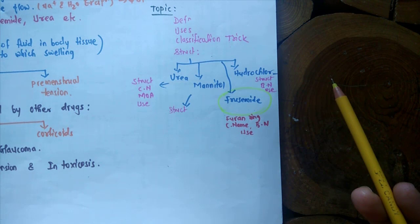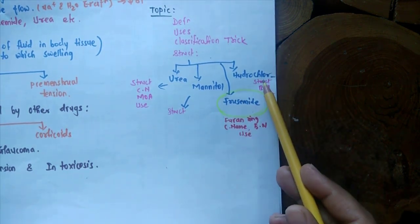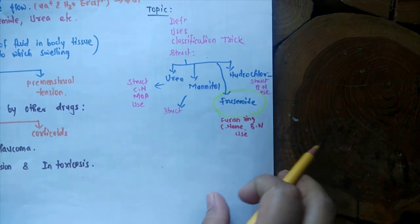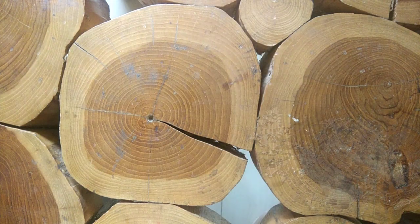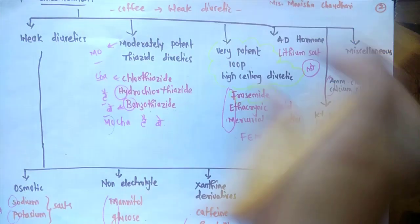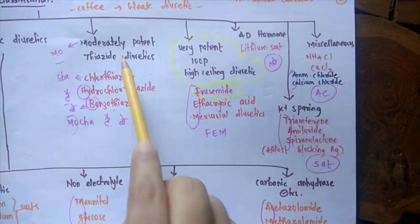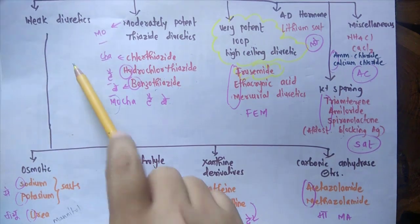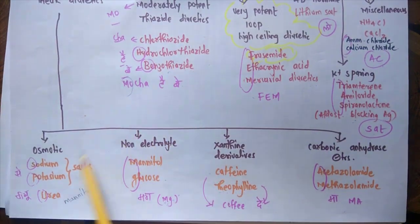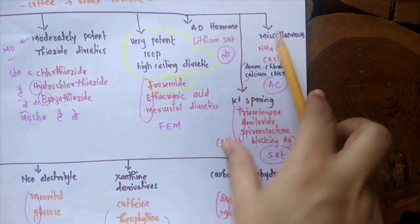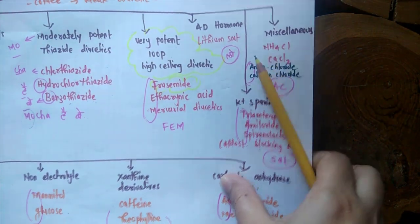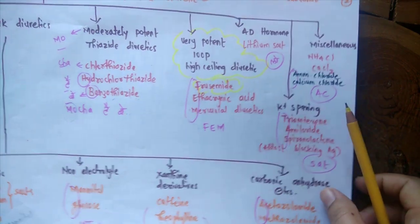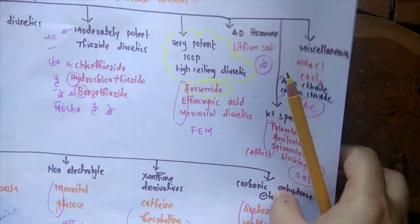We will see the details of why furosemide is called a loop diuretic. Then hydrochlorothiazide — since the name contains 'thiazide' — they are called thiazide diuretics or moderately potent diuretics. To revise the classification briefly: moderately potent diuretics include hydrochlorothiazide; weak diuretics include urea and mannitol; and very potent or loop diuretics include furosemide, also known as frusemide. We will cover the mechanism of action and structures in detail.